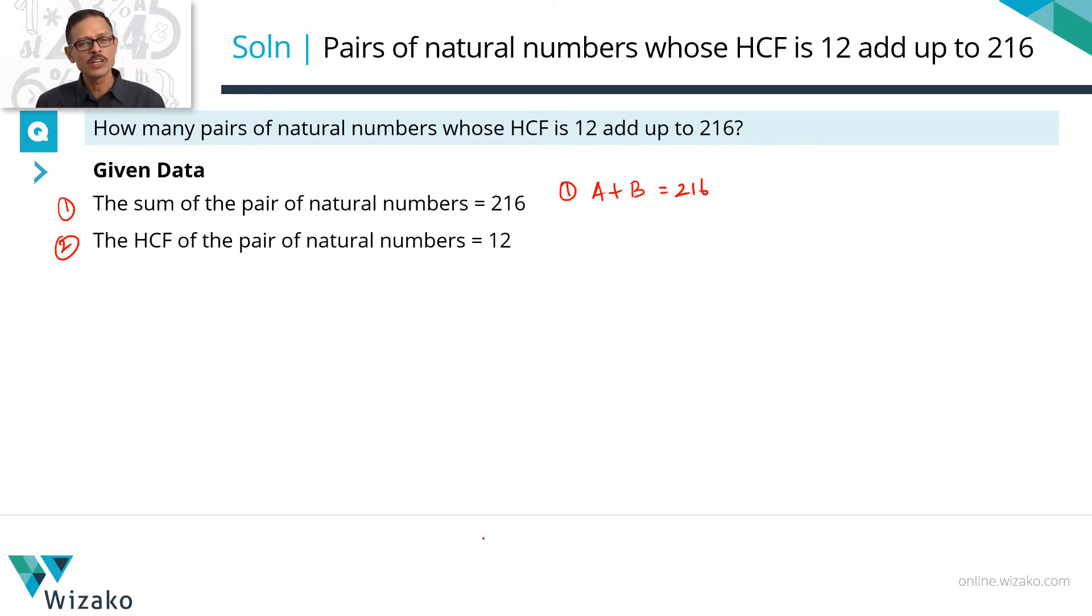What do we mean by the second one? What do we mean by the HCF of these two numbers is 12? HCF means highest common factor. So 12 is the highest number which is a factor common to both these numbers.